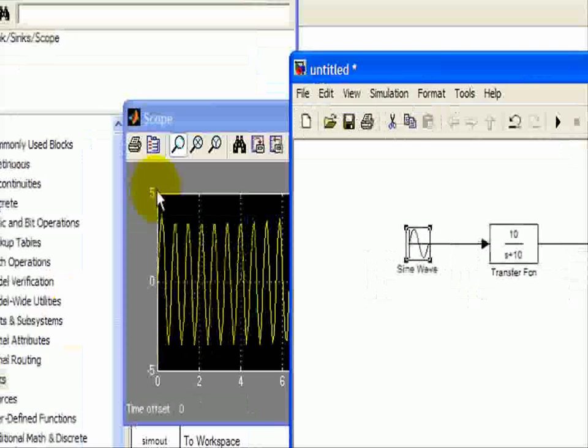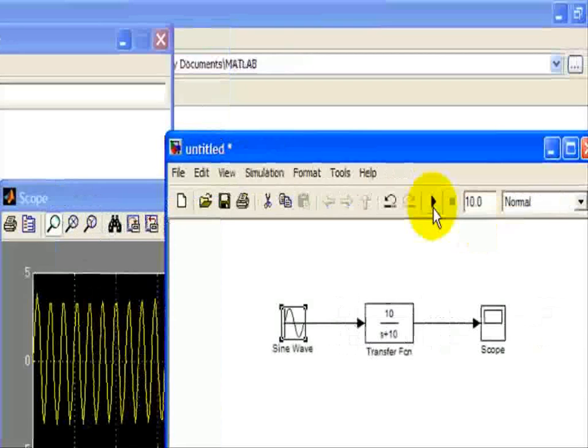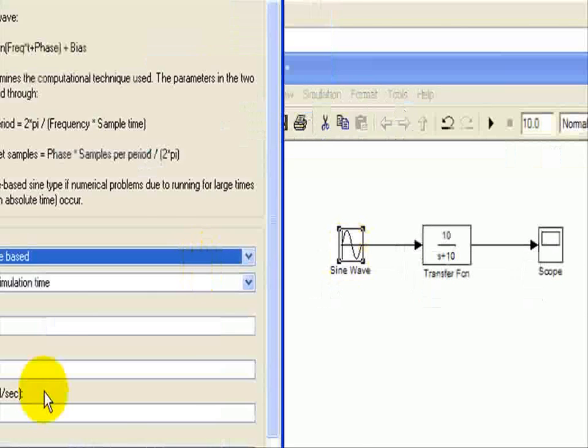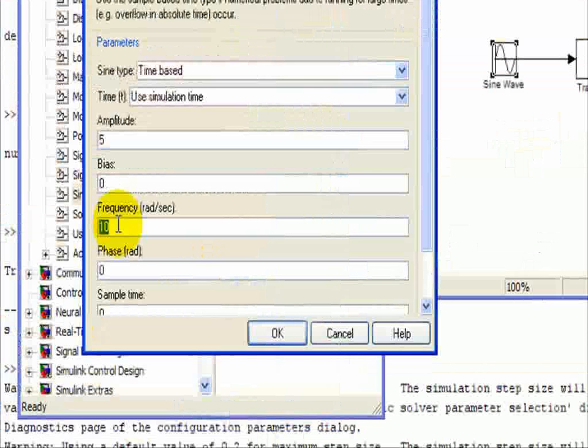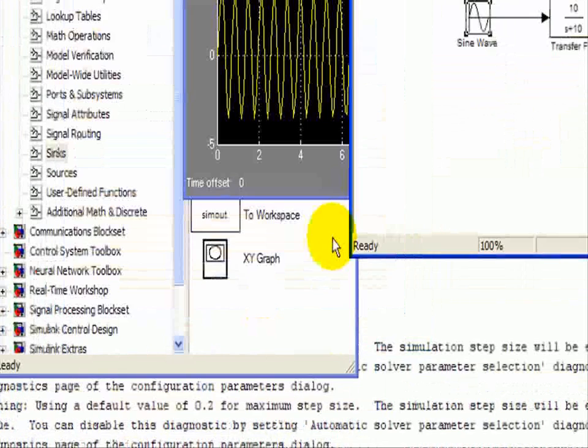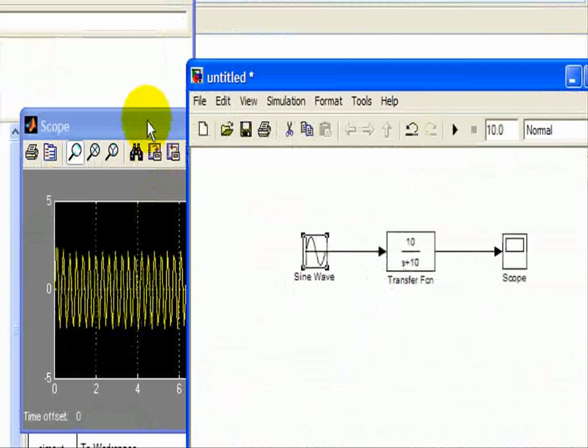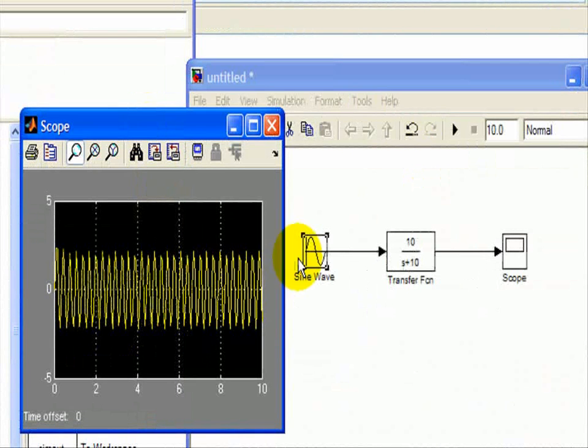And you can see here, the amplitude is no longer at 5, but it's slightly decreased. Then, finally, we'll go 10 times as much by changing our input frequency, let's say, to 20 radians per second, and we'll run it again. And we can see that it decreases even more, and we'll go 10 times as much.